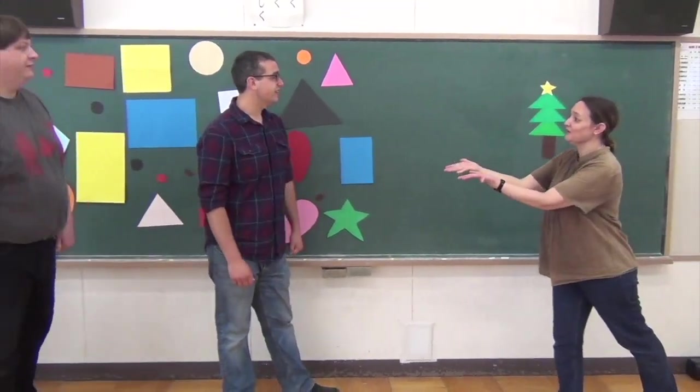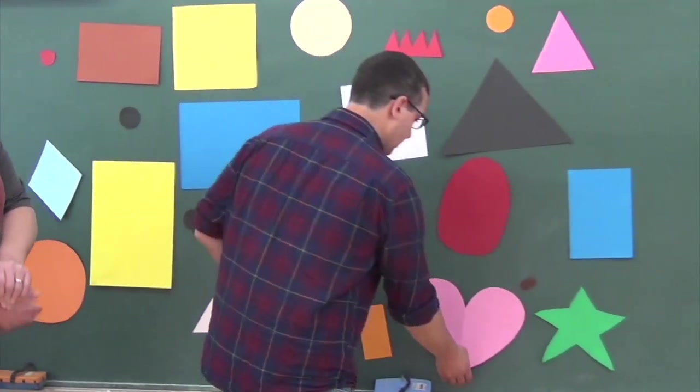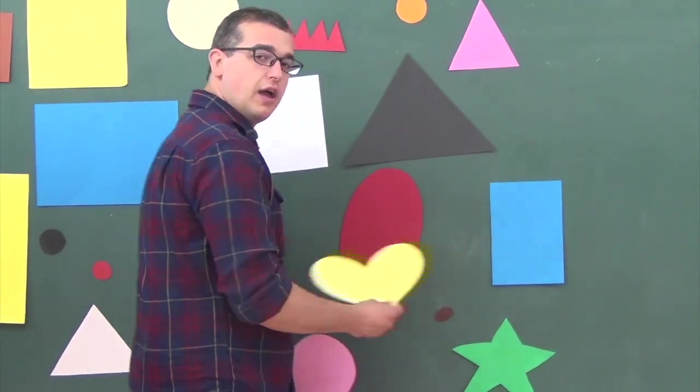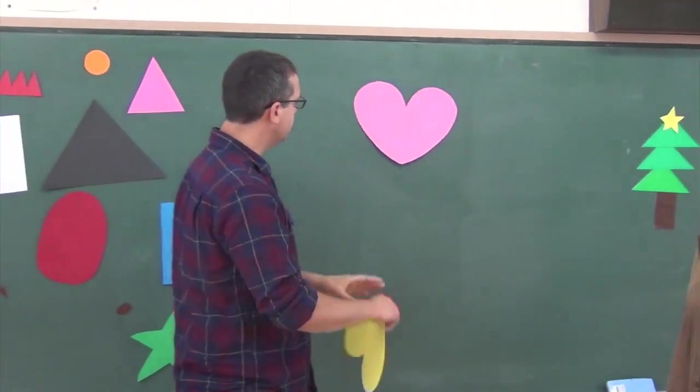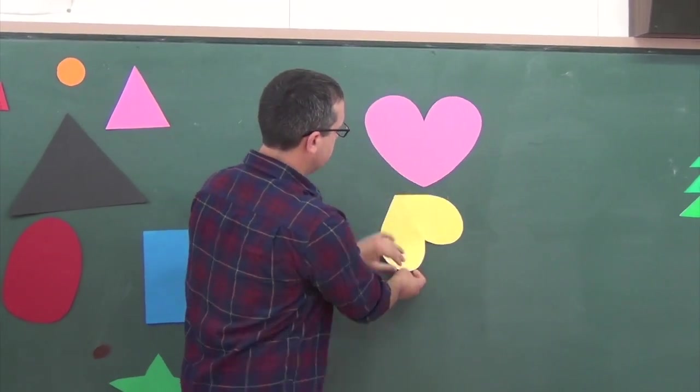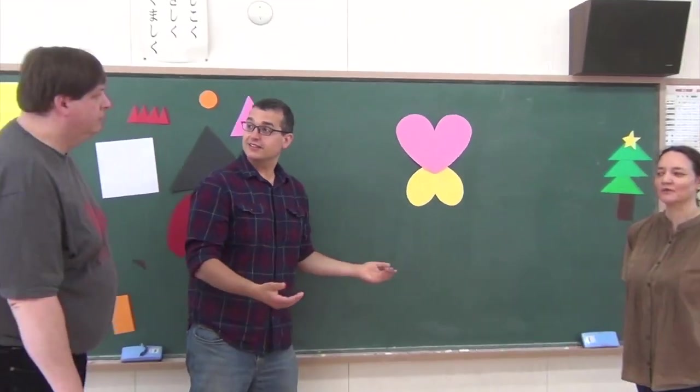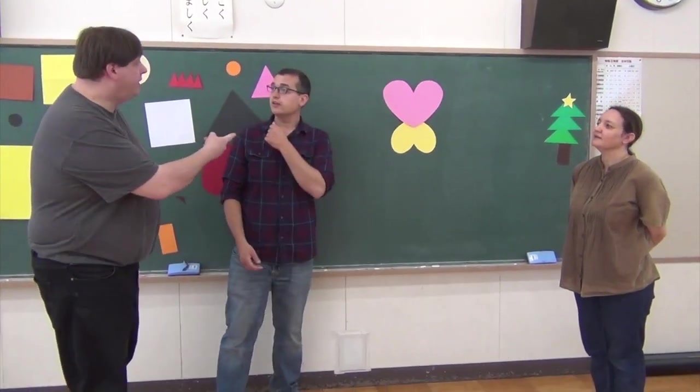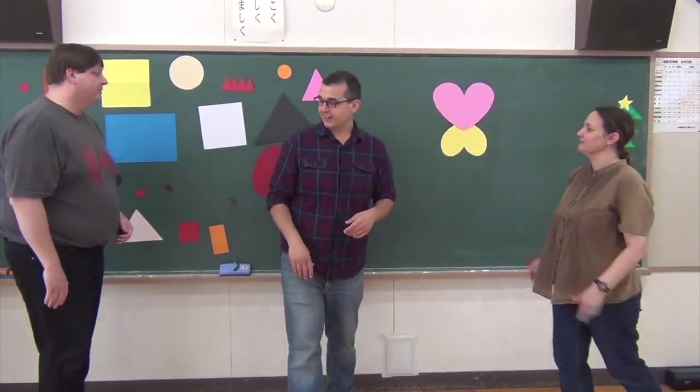What can you make? Hmm, oh, I know. Let's see. Pink heart, a yellow heart. One, two. What is it? Oh, I know. Okay, it's a butterfly. Yes, it's a butterfly. Yes. Oh, very nice.